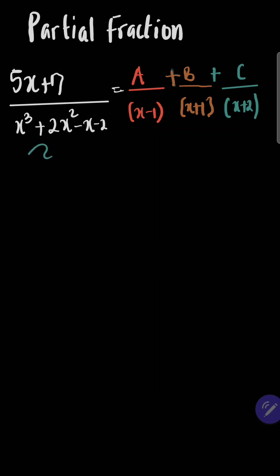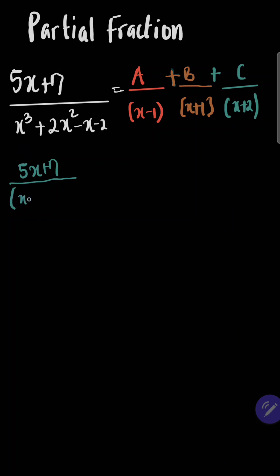Now in doing this, we should know that the denominator has been decomposed as x minus 1, x plus 1, and x plus 2. This is like writing 5x plus 7 divided by — if you decompose x³ plus 2x² minus x minus 2, you're going to get x minus 1, x plus 1, and x plus 2.